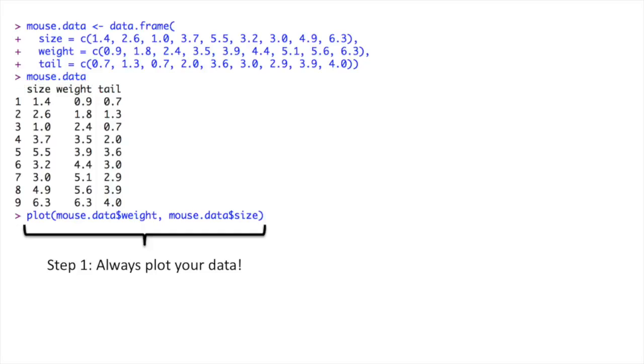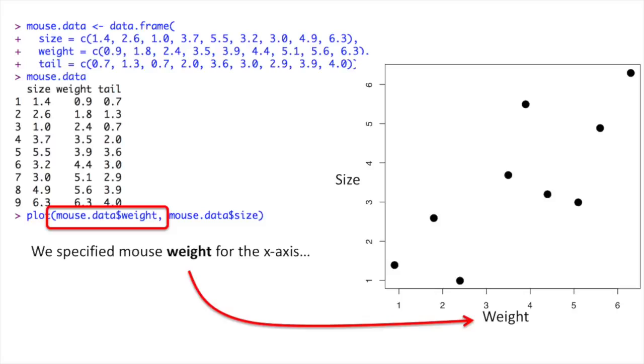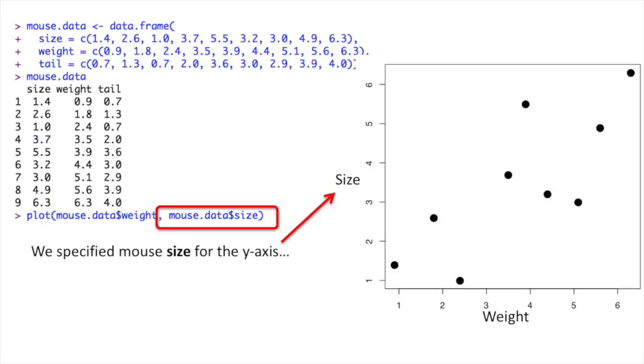Step 1, always plot your data. We specified weight for the x-axis and we specified size for the y-axis. Plotting your data as a first step is super important because it allows us to evaluate whether doing a linear regression to begin with is a good idea. Can we see a relationship in the data between size and weight? In this case we can, and that means doing a regression makes sense.